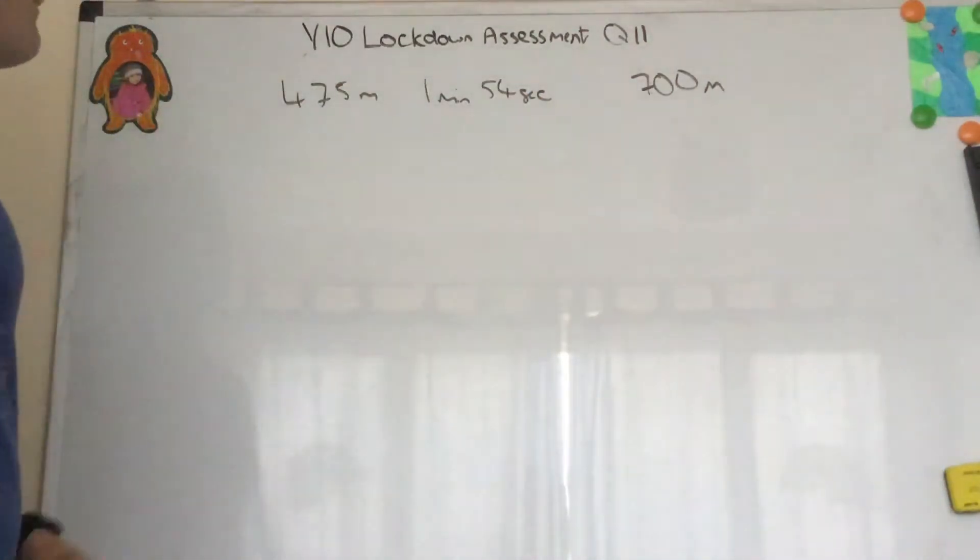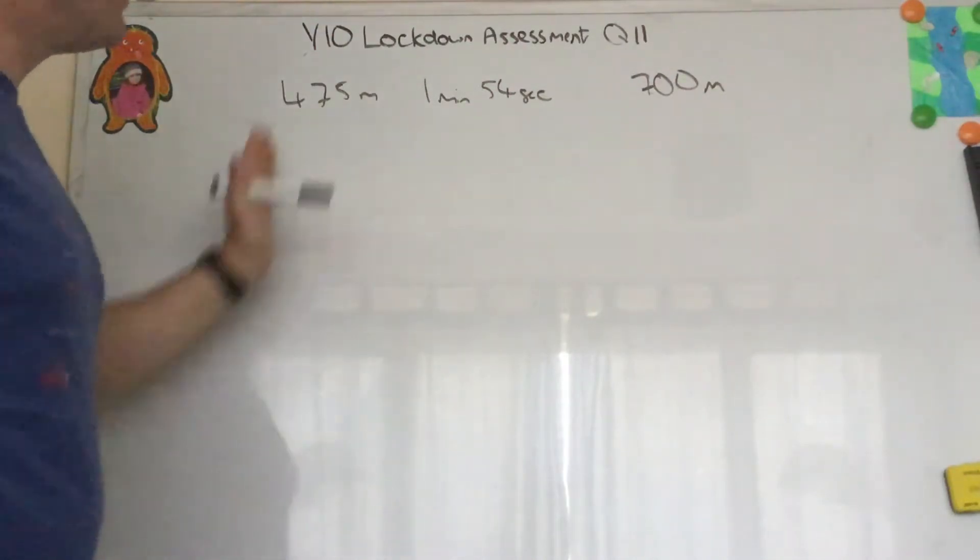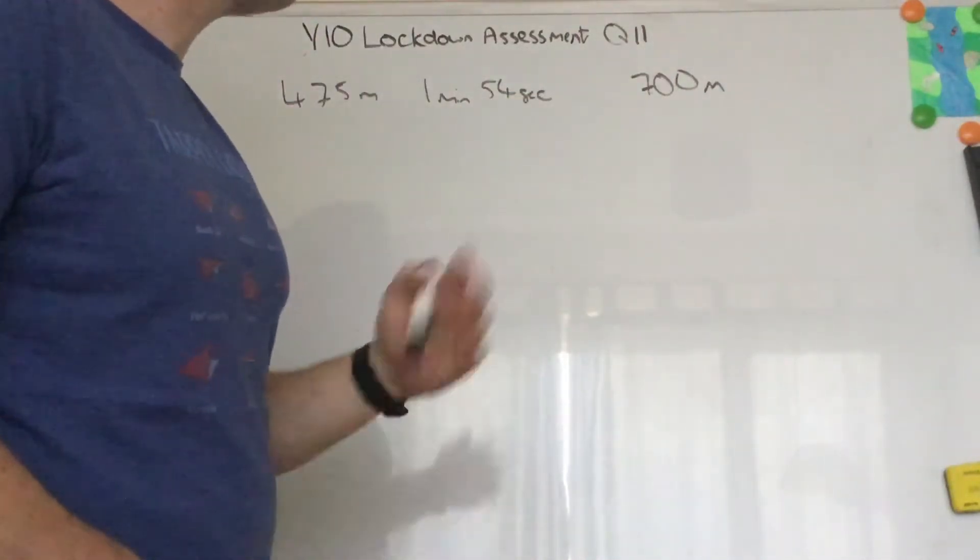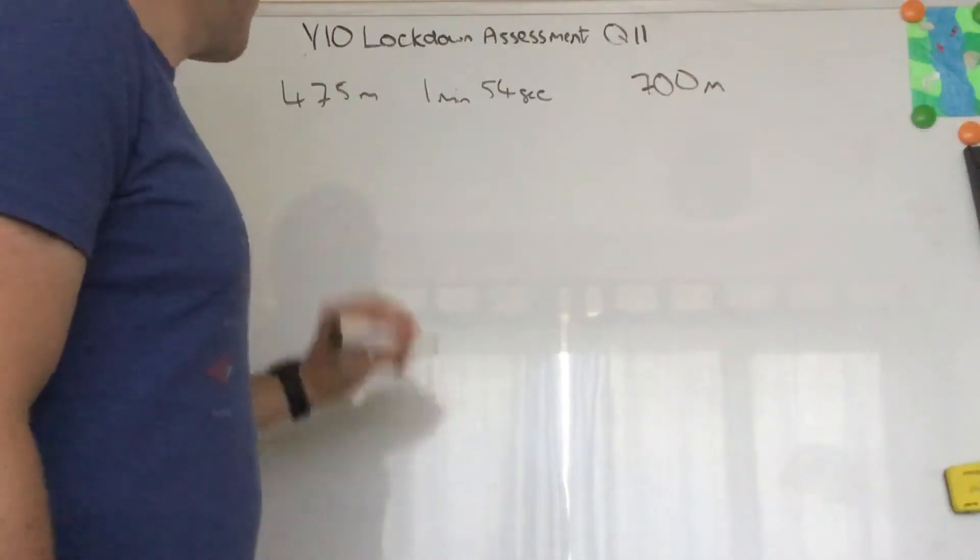Now you could work out her speed in meters per second or even meters per minute and then translate that to speed equals distance over time, 700 meters, but there's an easier way we can say.